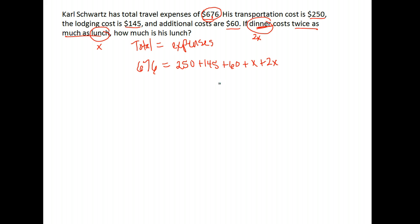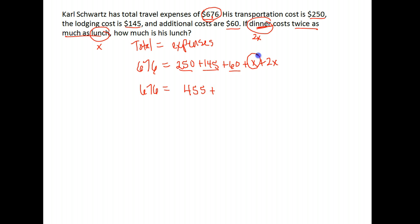Now we have an algebra problem to solve. The 676 stays on one side. We can combine our like terms — we add the 250, the 145, and the 60, which gives us 455. And we can combine the X terms: 2X plus X is 3X. So we have 455 + 3X = 676.